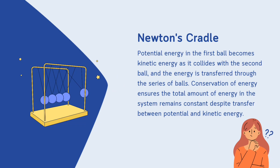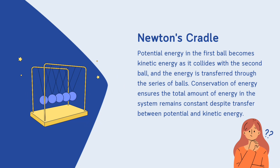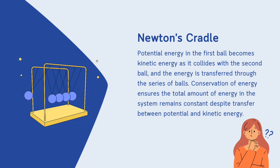Now we will move to our next example: Newton's cradle. Potential energy in the first ball becomes kinetic energy as it collides with the second ball, and the energy is transferred through the series of balls. Conservation of energy ensures the total amount of energy in the system remains constant, despite transfer between potential and kinetic energy.